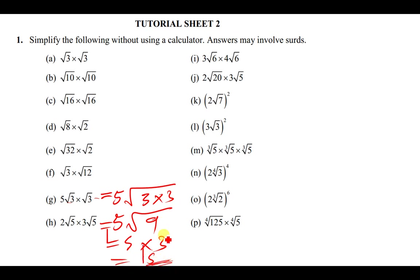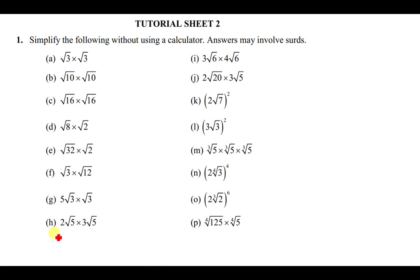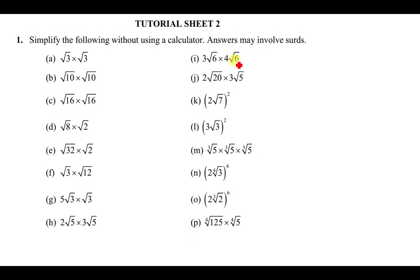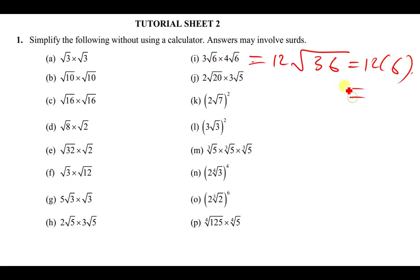For 2√5 × 3√5: multiply the outside numbers (2×3 = 6), then multiply under the root (5×5 = 25), giving 6√25 = 6×5 = 30. For 3√6 × 4√6: outside gives 12, under the root gives √36 = 6, so 12×6 = 72.